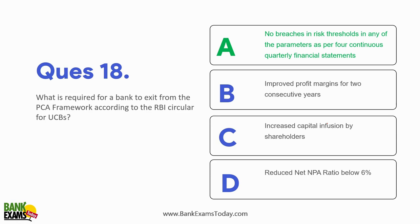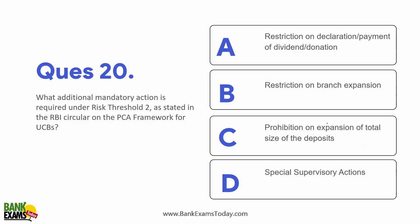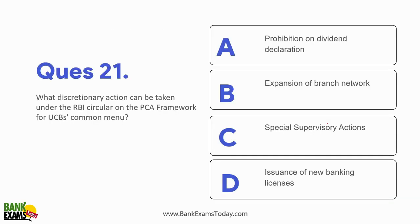To exit PCA, the bank needs to fix issues related to profitability, NPA, and capital requirements across four continuous quarterly financial statements. Under Risk Threshold 1, banks need to raise capital from existing members or by issuing equity and other permissible capital instruments. The additional mandatory action under Risk Threshold 2 is restriction on branch expansion.